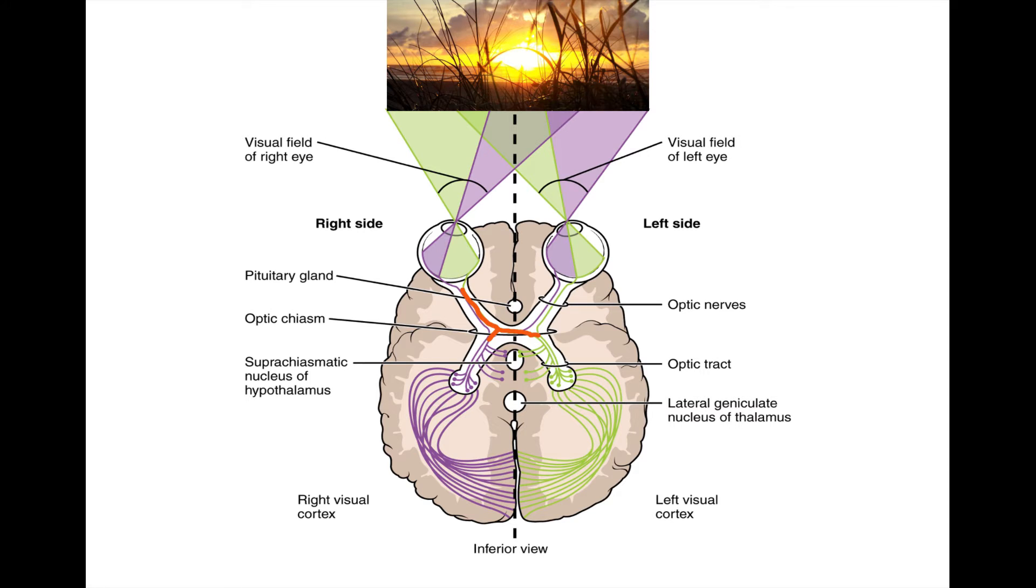Following the optic chiasm, visual information continues its journey via the optic tract, which now contains visual information from both eyes corresponding to the opposite field of view. So the left optic tract contains visual information from the patient's right field of view, and vice versa.